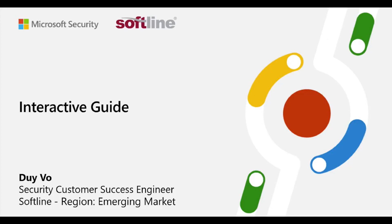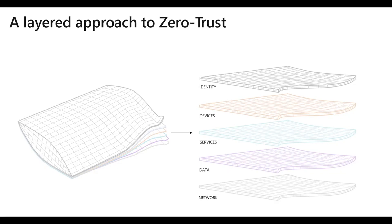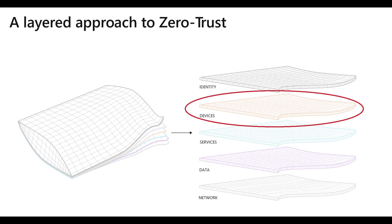Hi, my name is Duy. I'm happy to be a guide for you in this series. We aim to bring the knowledge of Microsoft Security products so that you can understand and apply these technical configurations for your real business. After going through how to secure the user's identity on the identity layer, now we will move to the second layer of the Zero Trust model, which is the devices.